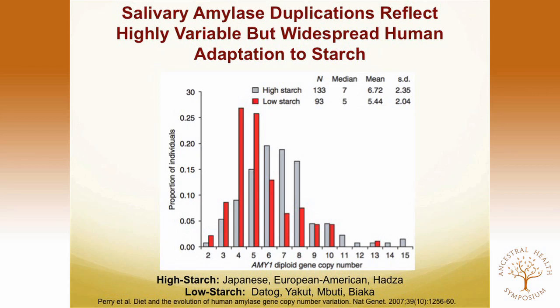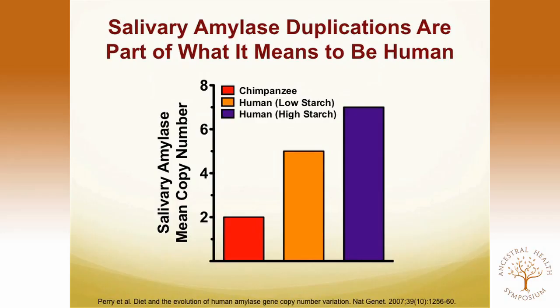Looking back at the original graph, we can get two things out of this. One: there's a lot of variation in tolerance to starch — from two copies to fifteen — so some people will handle starch a lot better than others. On the other hand, almost everyone has some increased capacity to handle starch when compared to great apes. One of the things that really stands out is that humans as a whole have these carbohydrate-specific adaptations.